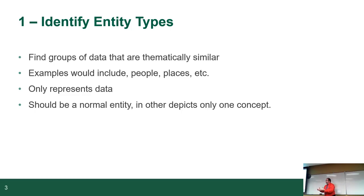An entity type should only represent data, not a thing specific. In other words, when I talk about a student, I don't refer to just one student. It generically applies to all students. I'm not talking about one specific, what makes one specific student unique. I'm talking about what makes all the students the same. We're talking about the data that makes up, not the student itself. And it should be what's called the normal entity. In other words, it only depicts one concept.